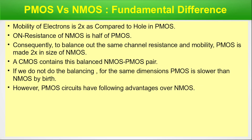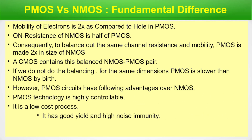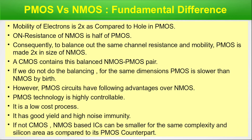PMOS circuits have the following advantages over NMOS: PMOS technology is highly controllable, it is a low-cost process, it has good yield and high noise immunity. On the other hand, NMOS-based ICs can be smaller for the same complexity and silicon area compared to their PMOS counterpart. With the layout and these slides, we have established the basic ground clearance of the PMOS versus NMOS difference, and balanced the performance gap between NMOS and PMOS with respect to speed.